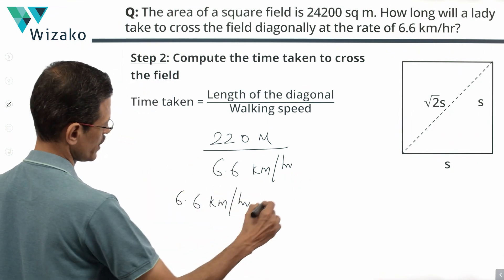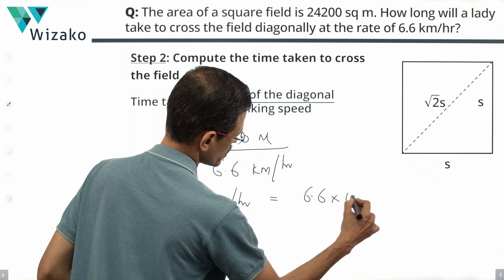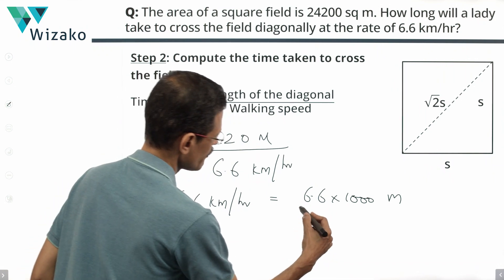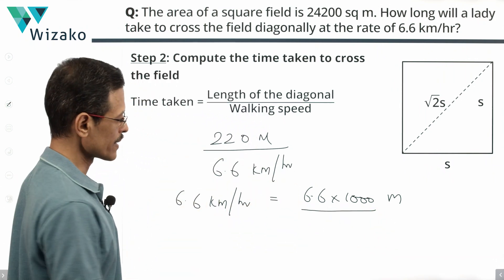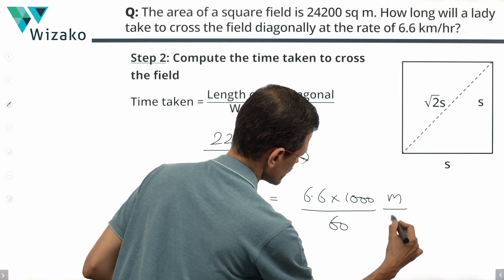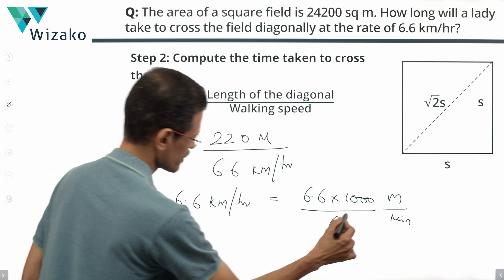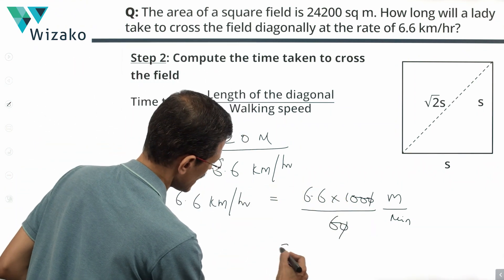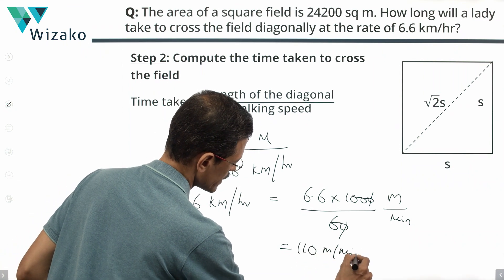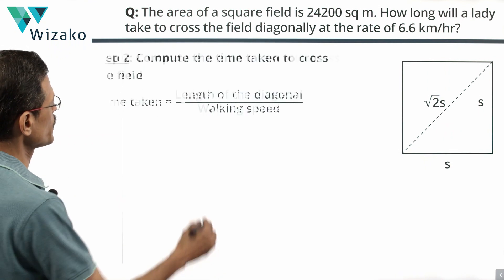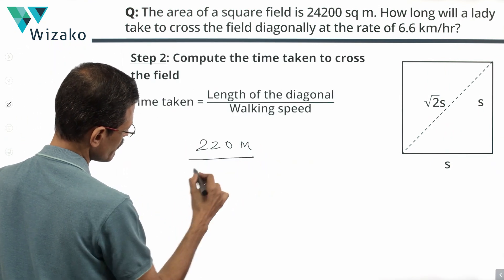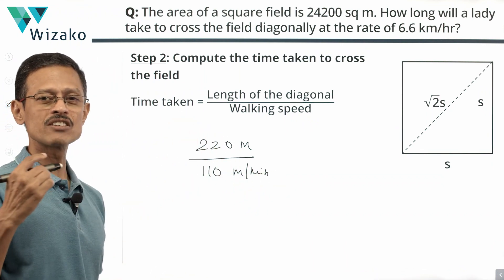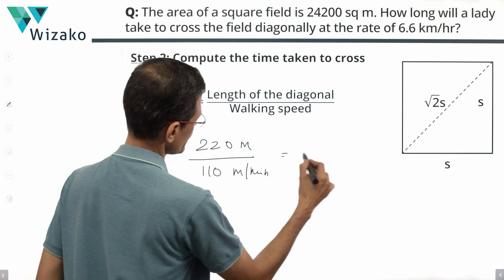So 6.6 kilometers per hour is 6.6 times 1000 meters, converting kilometers into meters. Divide it by each hour equals 60 minutes. So this divided by 60 will give us meters per minute. Cancel this zero with this zero. So what we have is 6.6 times 100 which equals 660 by 6, which is 110 meters per minute. Distance is 220 meters, speed is 110 meters per minute. So 220 divided by 110 will give us a number of minutes taken. 220 by 110 equals 2 minutes.